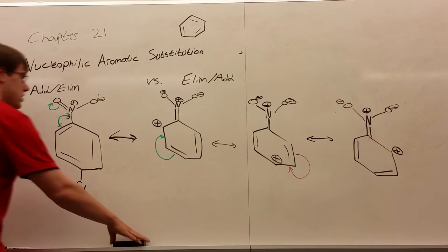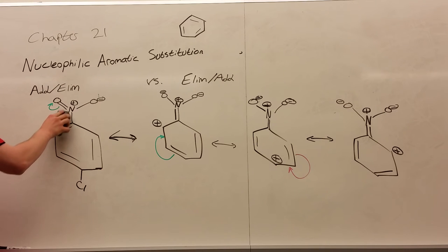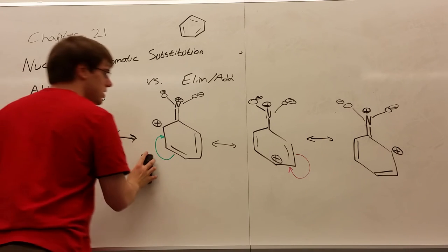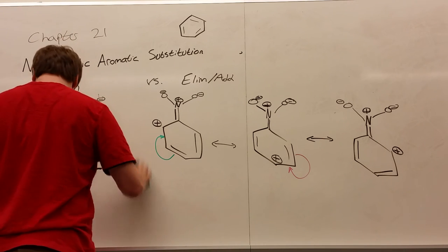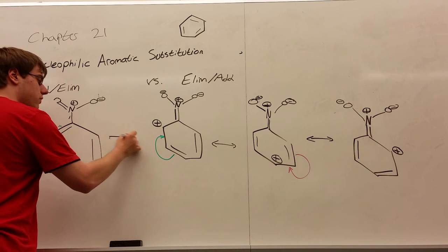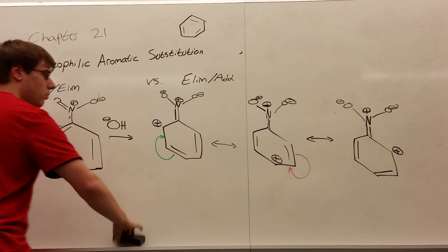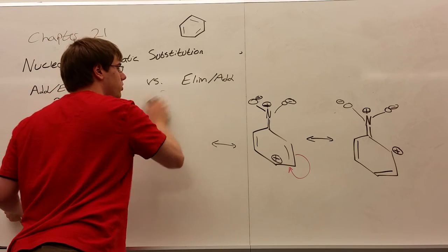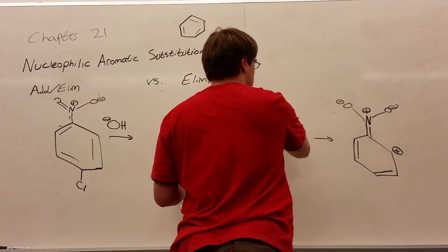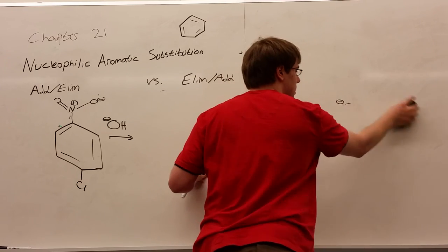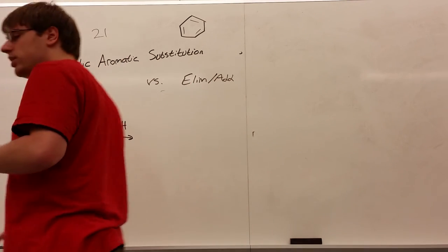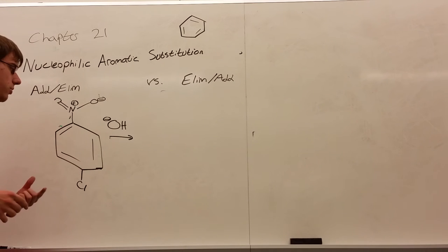Typically, it's a halogen that's your leaving group in these examples. Now, what's going to happen is you're going to have some decent nucleophile over the arrow. Let's say it is an OH minus. So we have an OH minus coming in. Well, the number one rule for your most efficient addition elimination reactant is that your leaving group needs to be either ortho or para to your withdrawing group